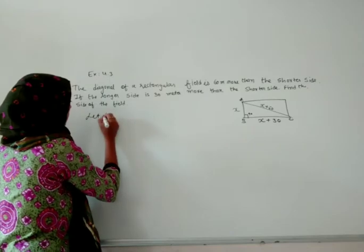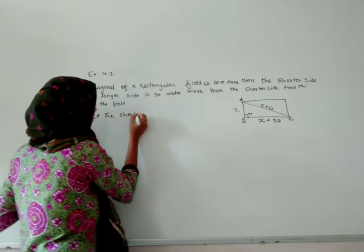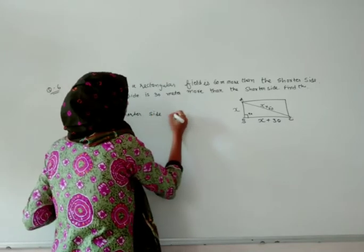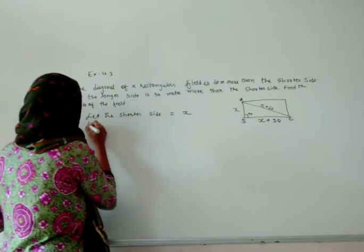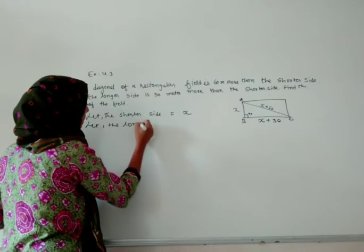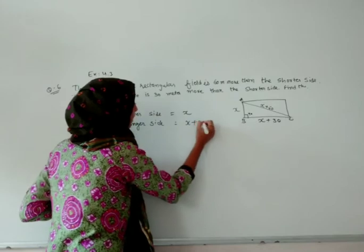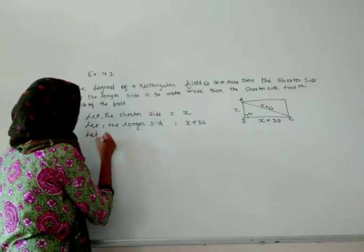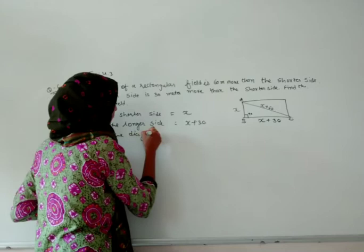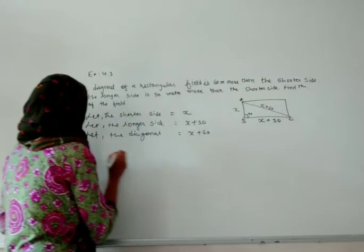Let the shorter side be x. Let the longer side be x plus 30, and let the diagonal be x plus 60.